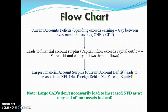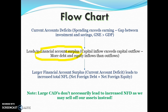From a flow chart perspective, this relationship is critical. If we have a current account deficit, it means we're spending more than we're earning. To fund that deficit we have credits in the financial account, leading to a financial account surplus where capital inflow exceeds capital outflow — more debt and equity inflows than outflows. Every time we run this financial account surplus it leads to more net foreign liabilities, as we issue either debt or equity to fund our current account deficits.